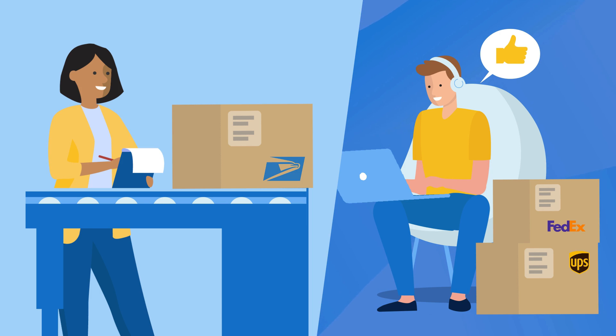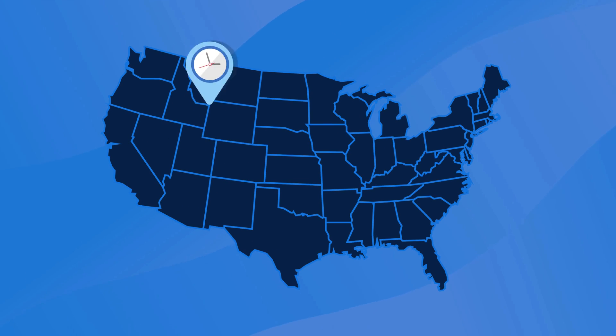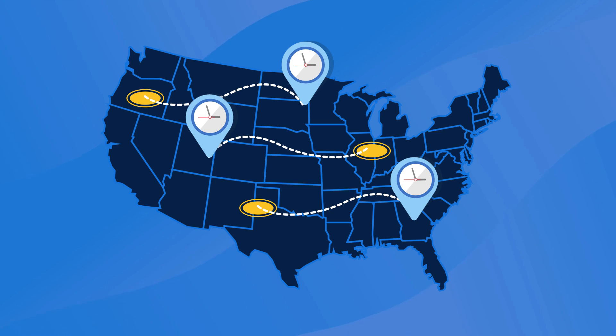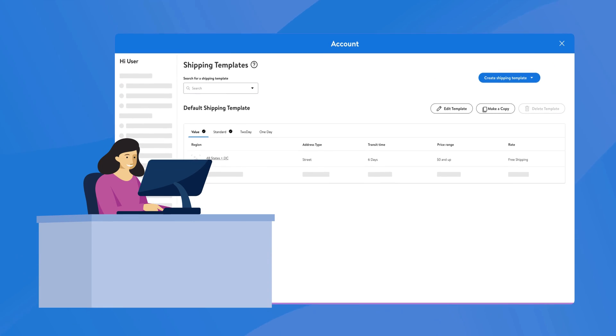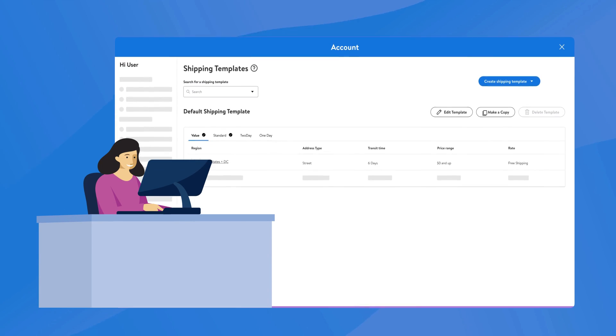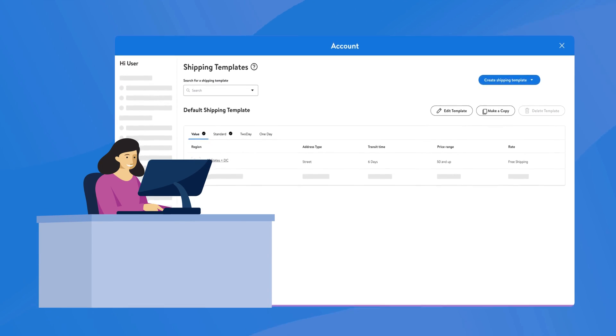This means Walmart will automatically calculate transit times based on your warehouse's location, so you can say goodbye to manually configuring your transit times. If you don't use one of our approved shipping carriers, you can configure your shipping settings manually.